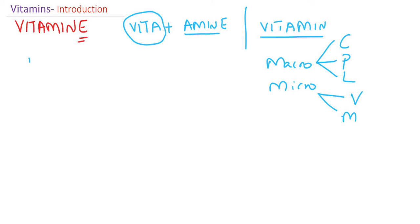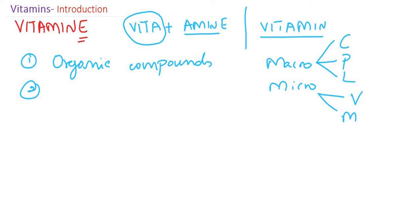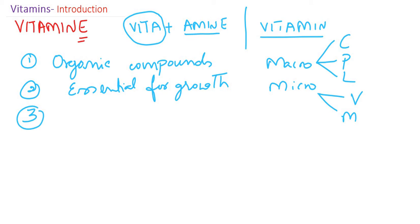Vitamins are organic compounds, whereas minerals are usually inorganic compounds. These organic compounds are essential for growth and development — they are required for various biochemical reactions taking place in our body. Since they are micronutrients, they are required in small amounts.